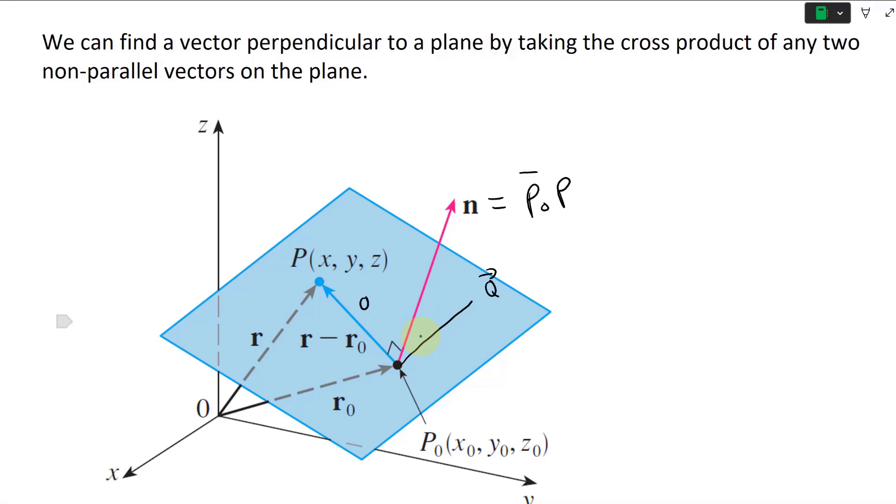Or instead of writing it like that, I'll just call this vector a, and this vector b, onto a point, like that. Yeah, I think this is easier to do.